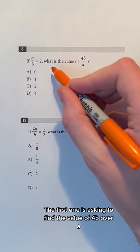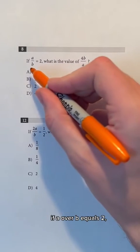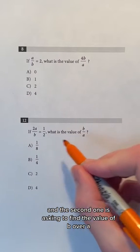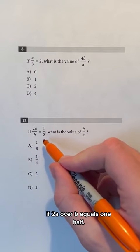The first one is asking to find the value of 4B over A if A over B equals 2, and the second one is asking to find the value of B over A if 2A over B equals 1 half.